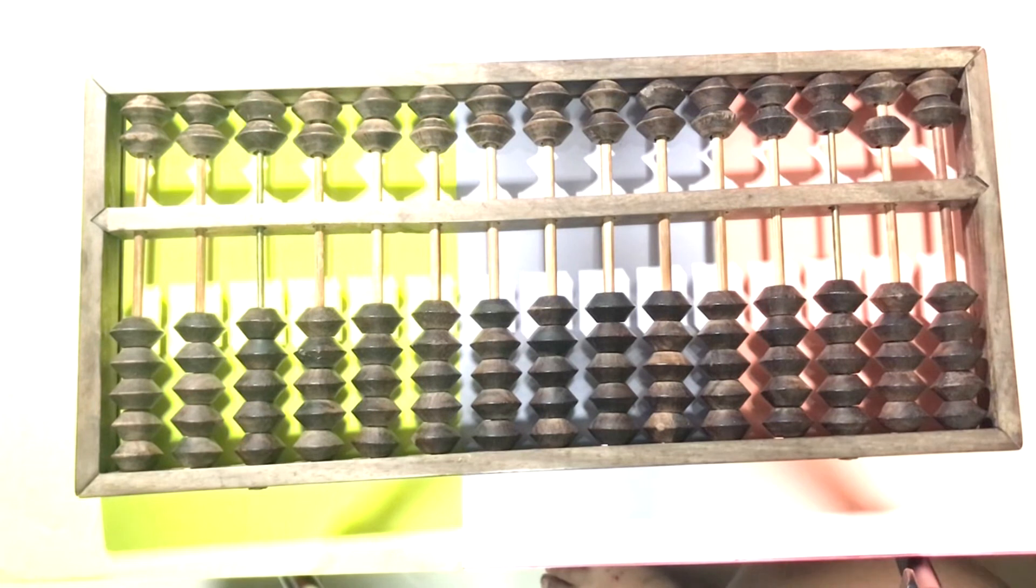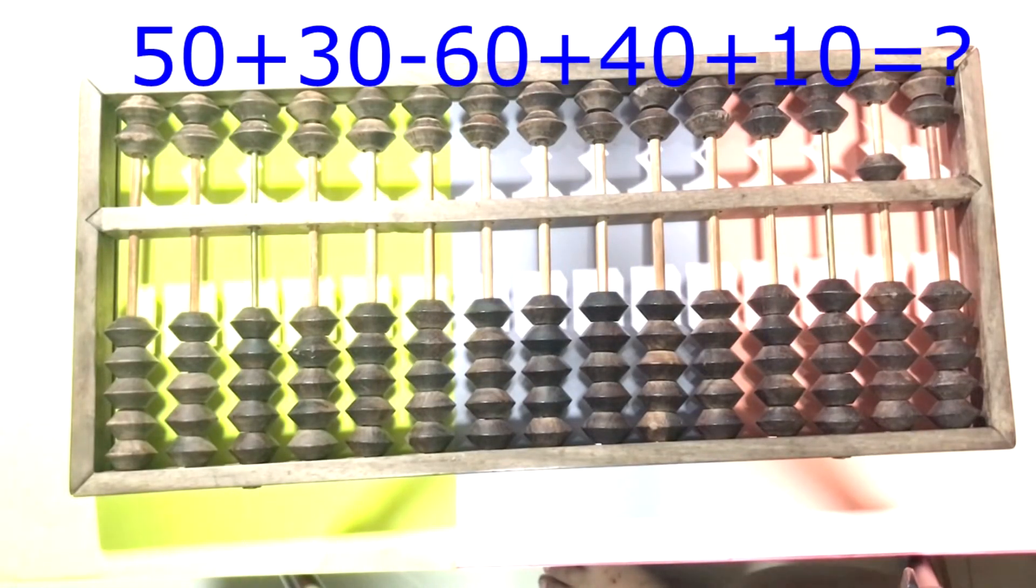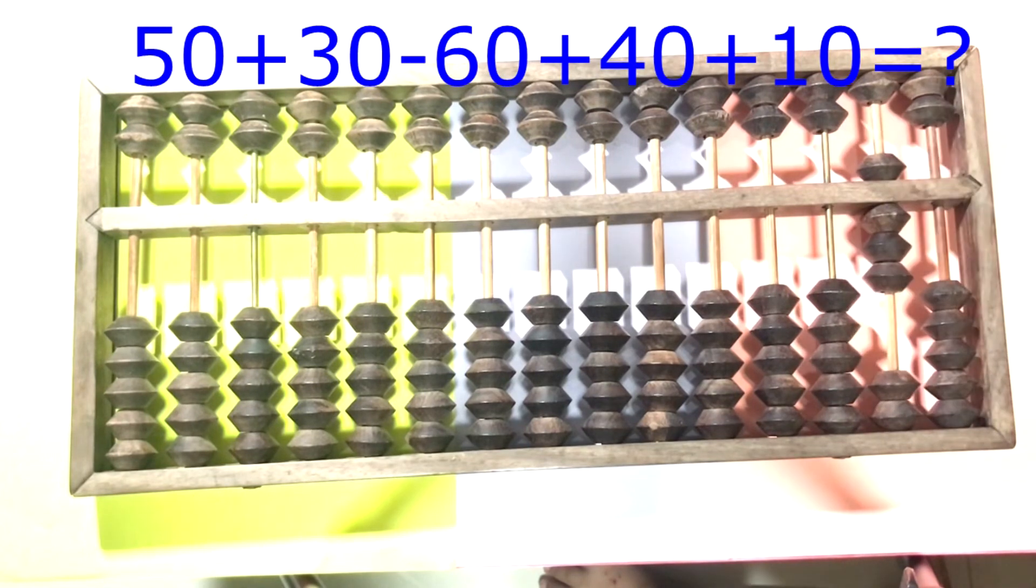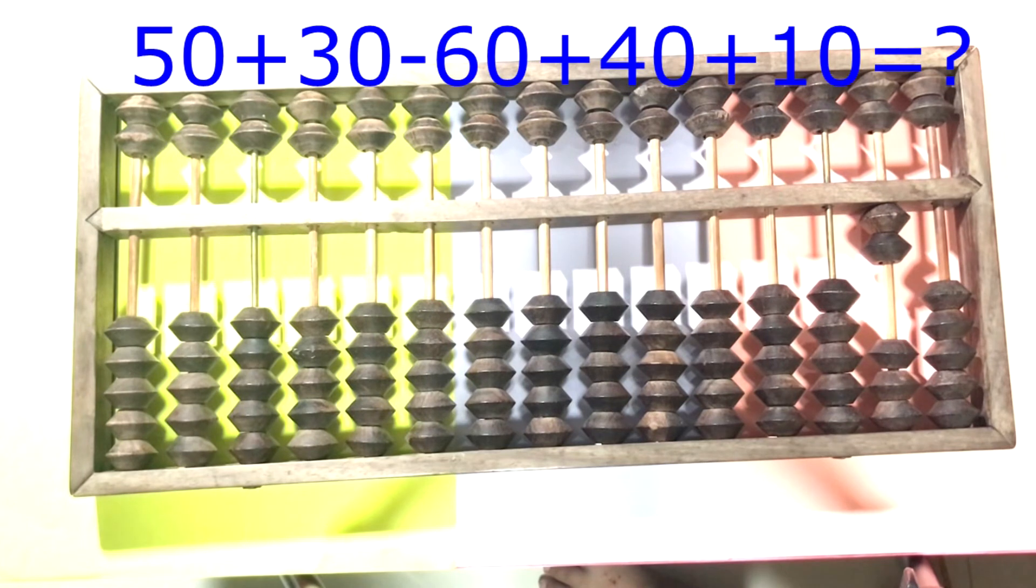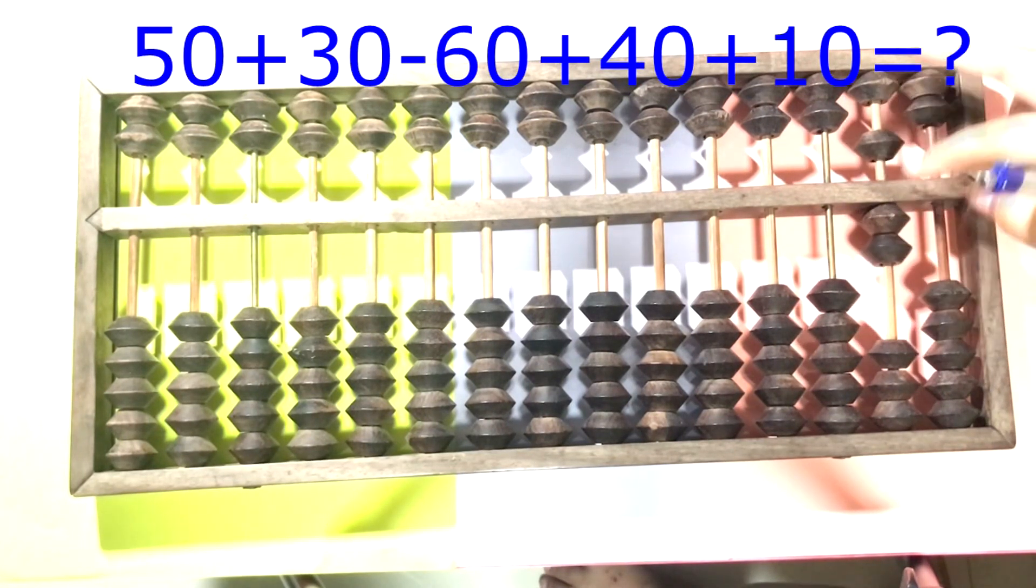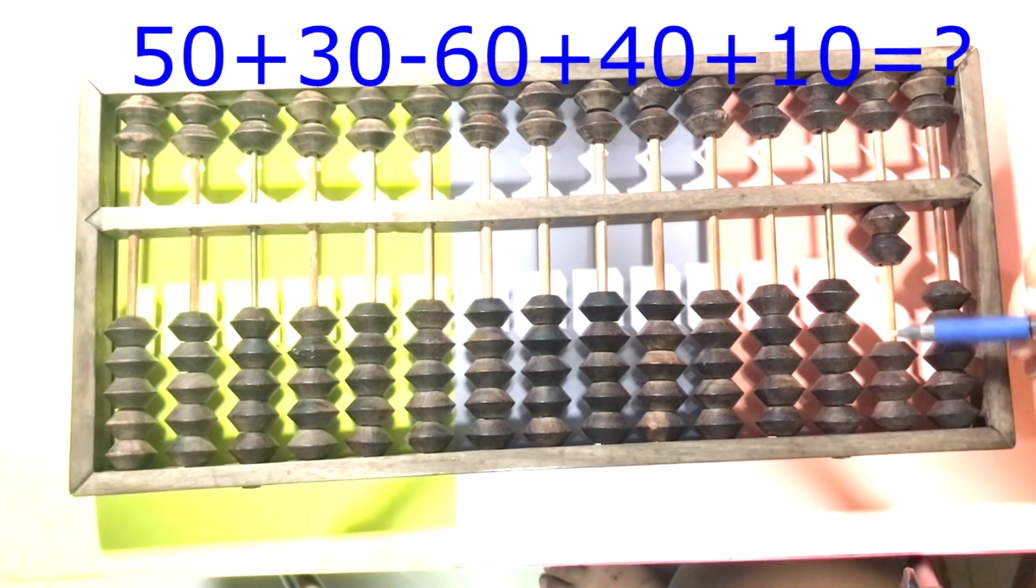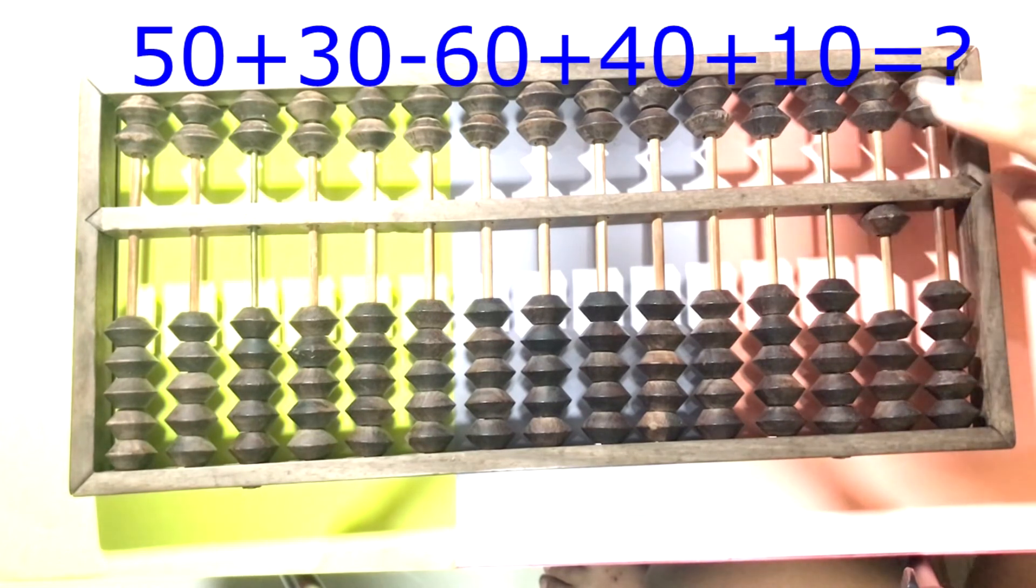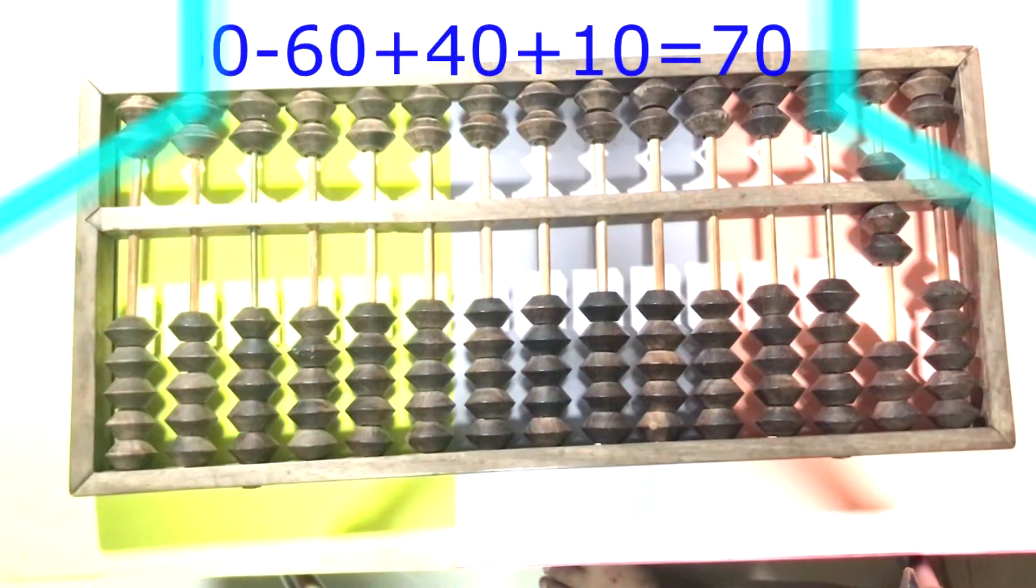Okay, the next one. 5 plus 3 plus 3 minus 6 plus 4. Again, we don't have 4 here. So we minus 10 plus 5 and then plus 10. The answer is 17.